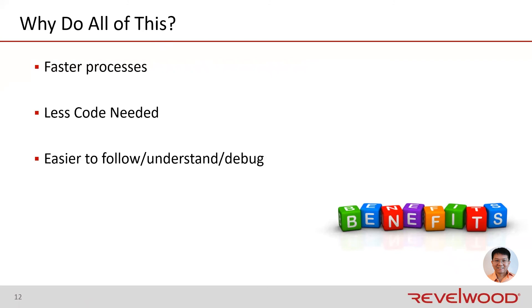Why do we do all this? It helps TI processes run faster and more efficiently, and optimizes the functionality of a model. It requires less code to maintain and update, so as business processes or reporting needs change, you'll need to update less code and it will be easier to maintain. Lastly, it makes the code easier to follow, understand, or debug. If there's an issue with a TI process, you may only need to concentrate on one or two functions to determine where the issue lies.